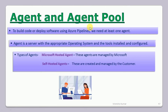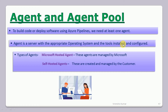First, what is the agent? To build the code and deploy the software using Azure Pipelines, we need at least one agent. If you are working with Azure, you should be aware of Azure Pipelines, and to work with Azure Pipelines we need at least one agent. Basically, the agent is a server with the appropriate operating system and the required tools installed and configured.